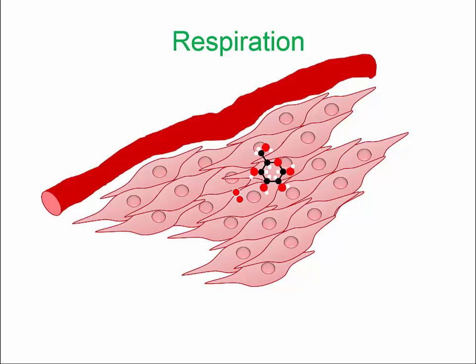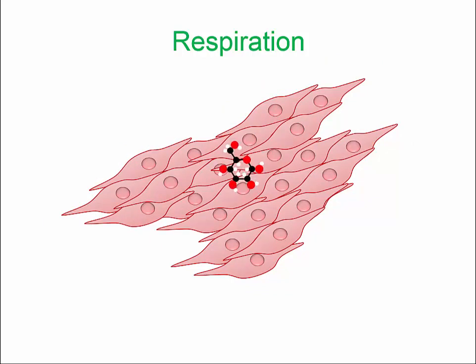So what do the muscle cells do with these molecules, both glucose and oxygen? They undergo a cellular process that produces carbon dioxide and also water.